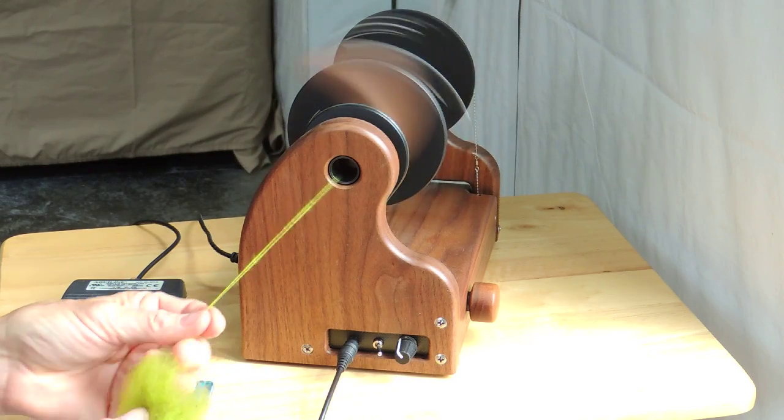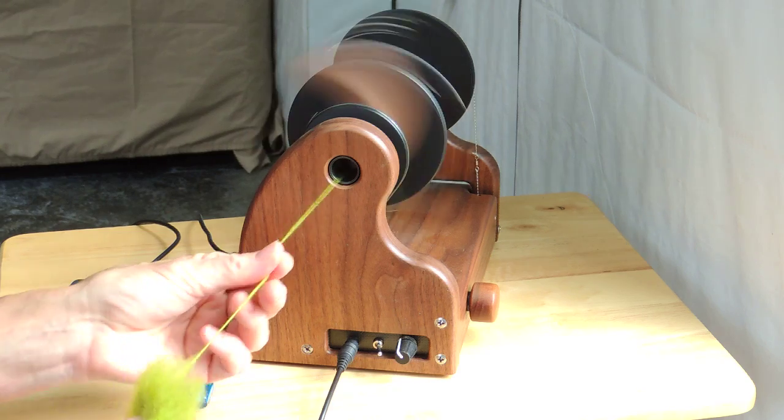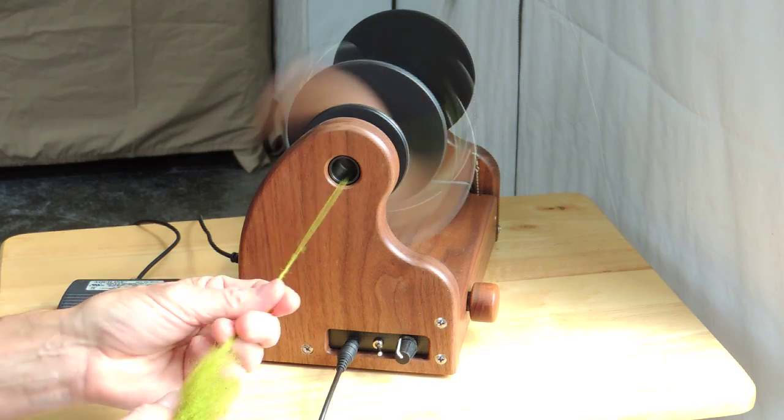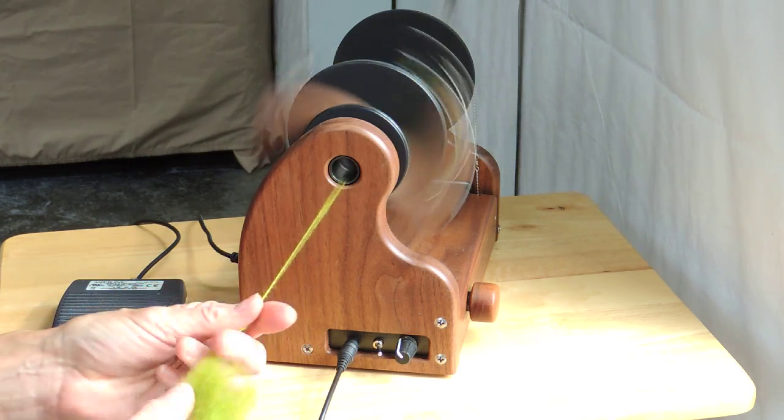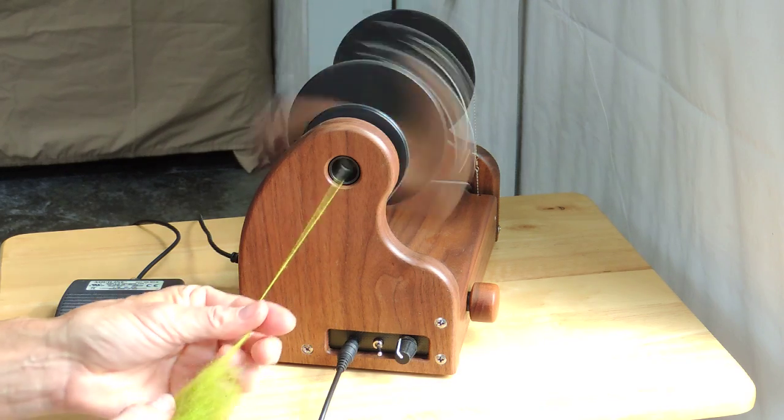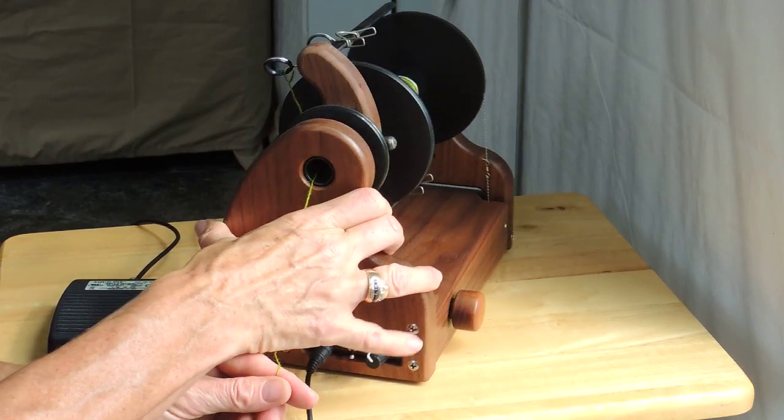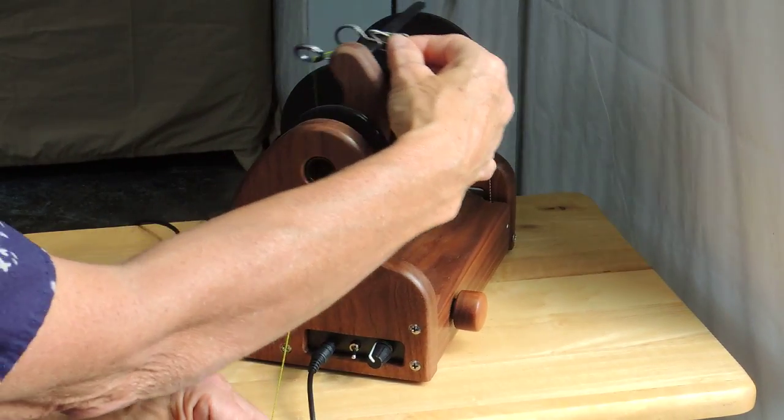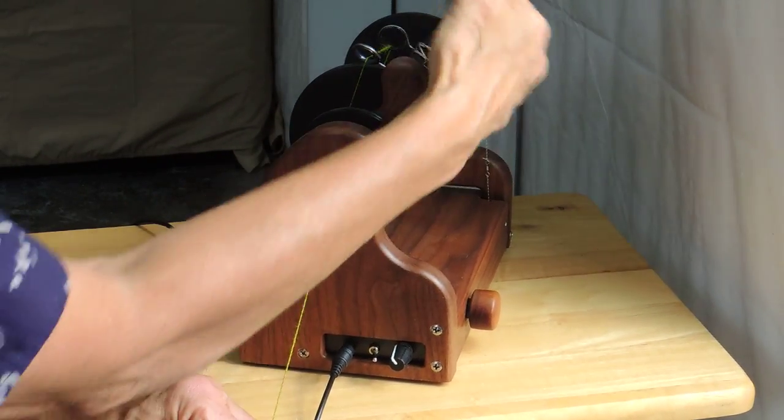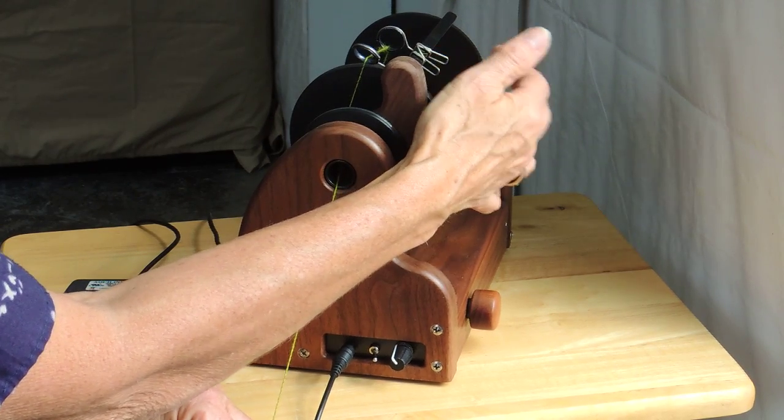I'm spinning here on the Hanson Crafts mini spinner. The flyer I'm using right now is our jumbo sliding hook flyer and I can show you. As I want to advance my hook, all I have to do is give it a gentle nudge.